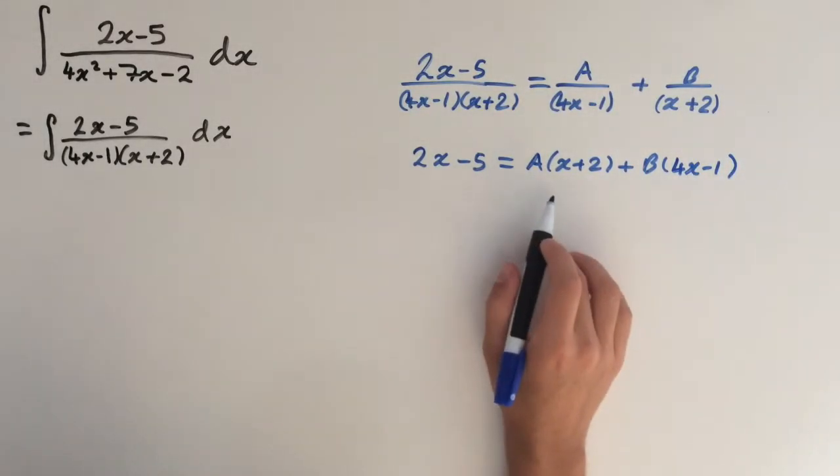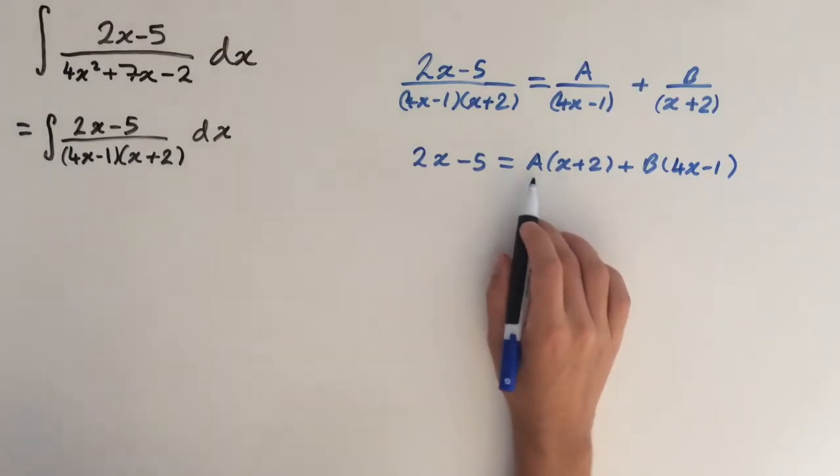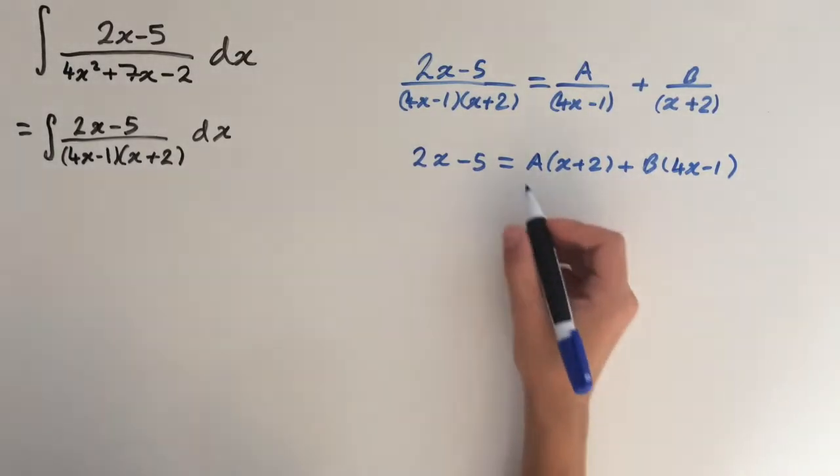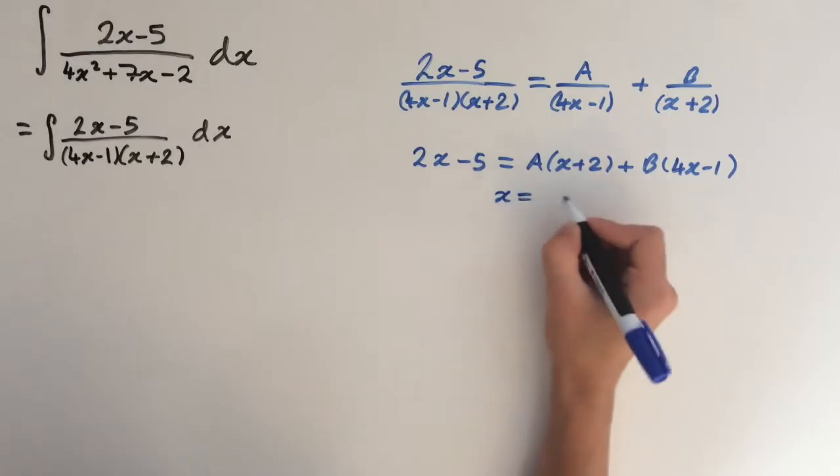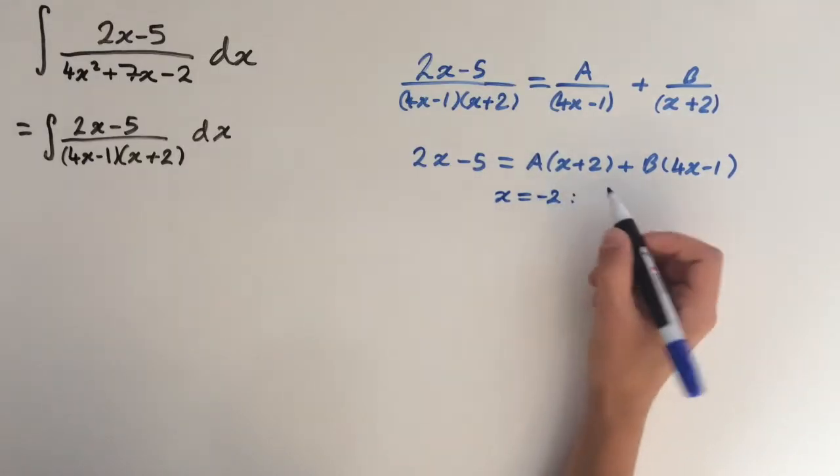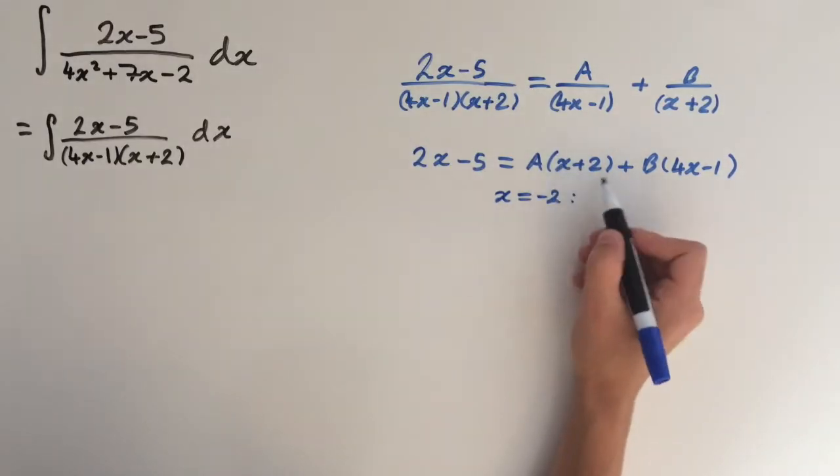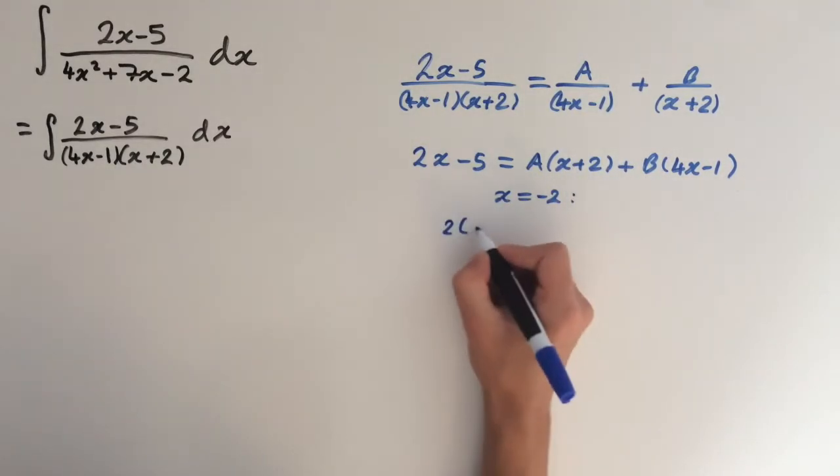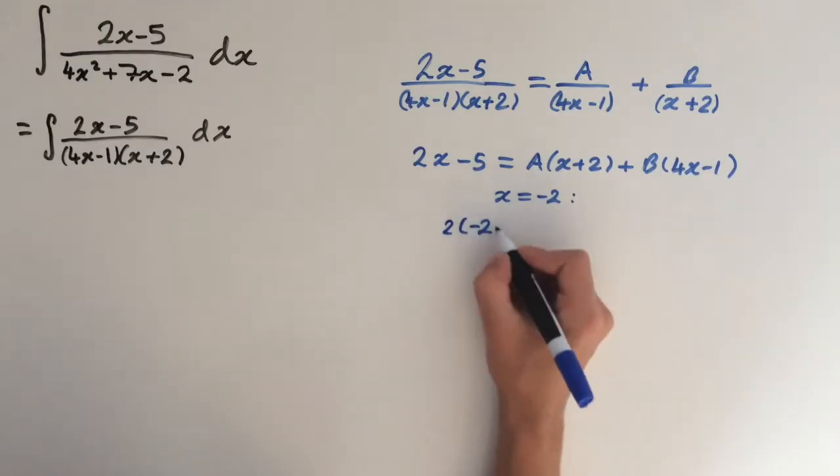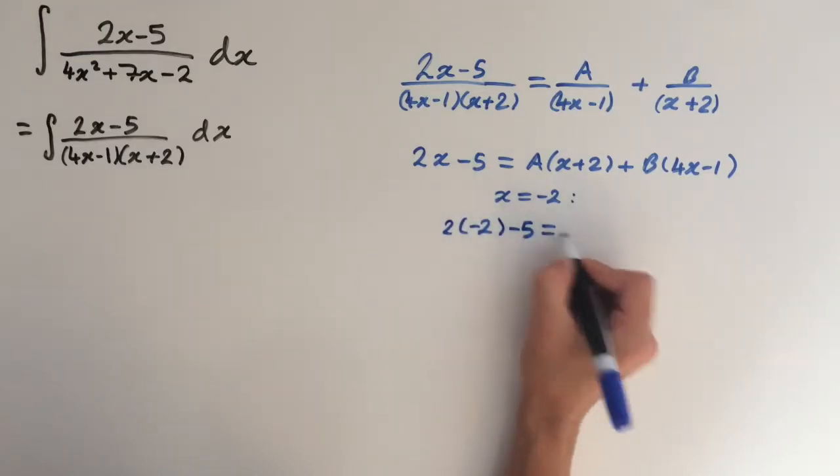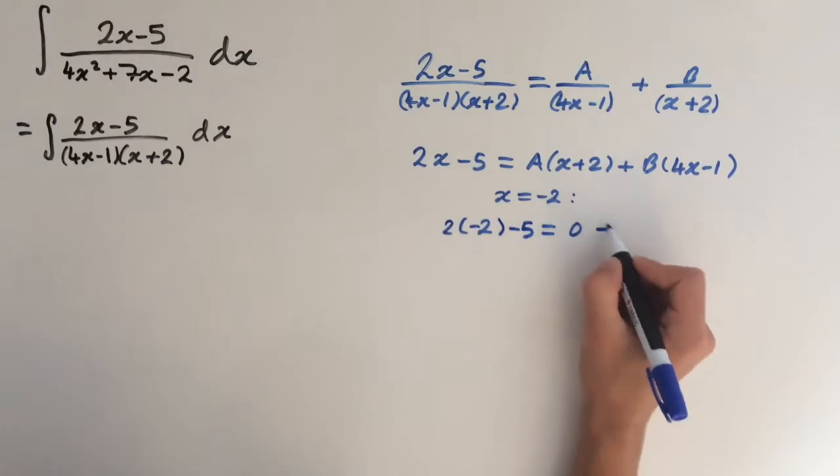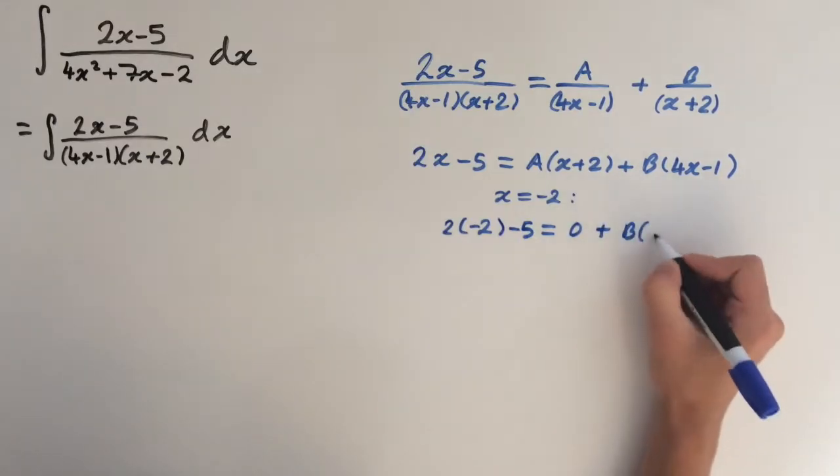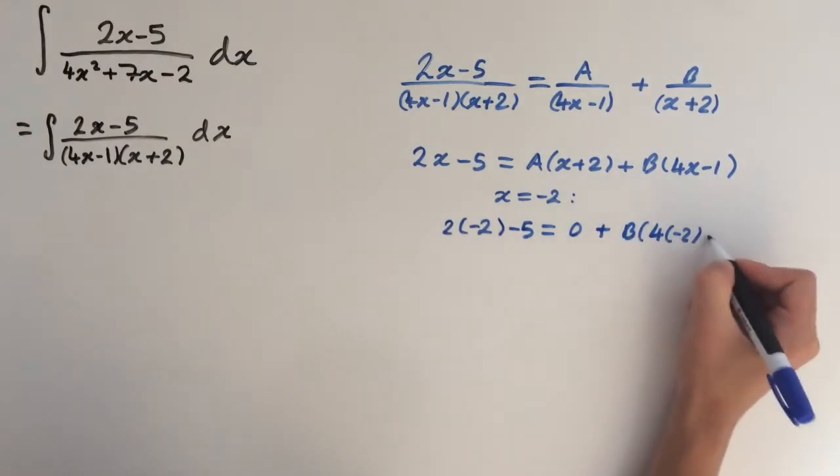So now we want to substitute some values in for x to evaluate A and B. So if we let x equal minus 2, this bracket here is going to equal 0. So the value of A is going to disappear. And we're just going to be left with 2 times minus 2 minus 5 equals 0 plus B times 4 times minus 2 minus 1.